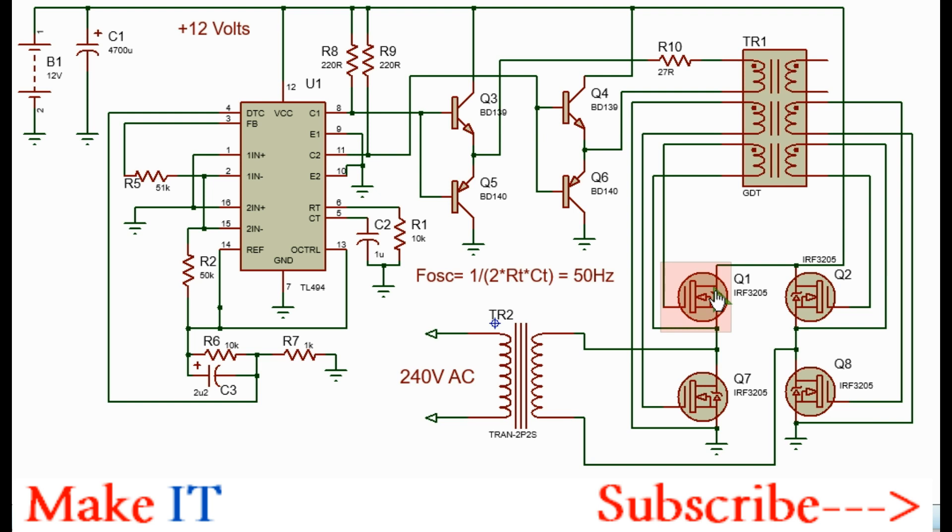They are connected in such a way that Q1 and Q8 will conduct at the same time, while Q2 and Q7 will conduct also the same thing. At no point should Q1 and Q7, or Q2 and Q8, conduct at the same time because it will short the power supply and damage your MOSFETs.